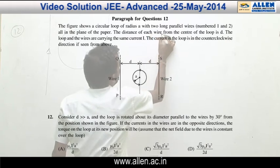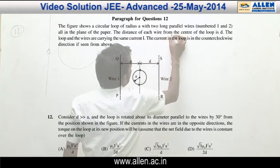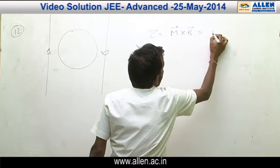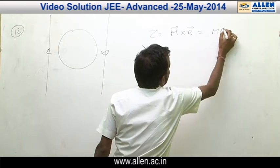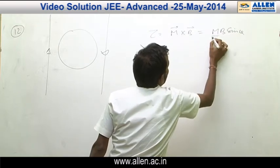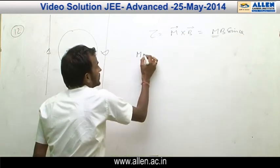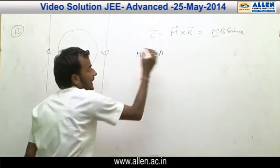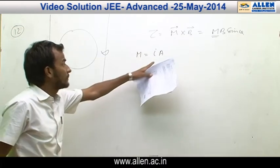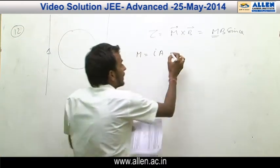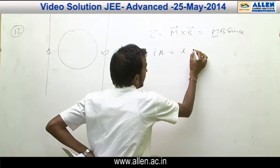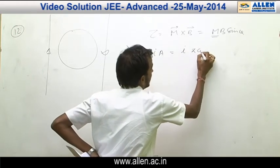The net torque on the ring equals M × B, or MB sin θ, where M is the magnetic moment of the ring, which can be written as I × A. The current in the ring is I and the area of the ring is πA².